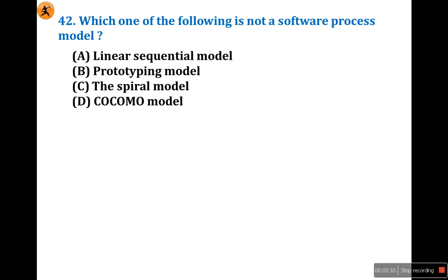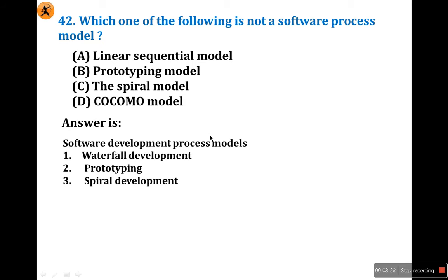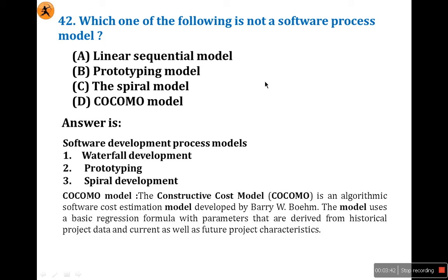Which of the following is not a software process model? The options are: Linear sequential model, Prototypic model, Spiral model, and COCOMO model. Actually, the first three are software development process models — Waterfall, Prototyping, and Spiral development. Some other models are also listed. So what is the COCOMO model?